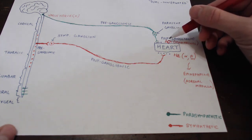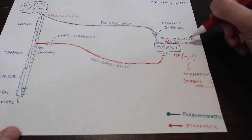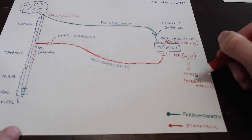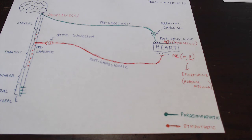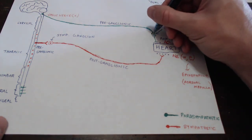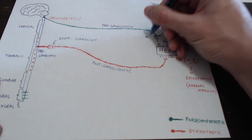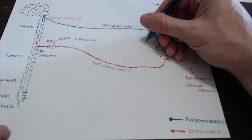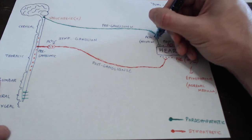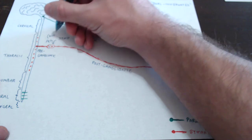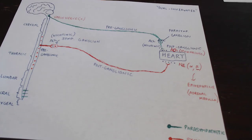So acetylcholine is going to be your neurotransmitter for parasympathetic responses. Norepinephrine and epinephrine are going to be the neurotransmitter and hormone that facilitate sympathetic responses. The last thing to finish up here: we've also got neurotransmitter being released by our pre-ganglionic neurons. The type of neurotransmitter used here really doesn't matter quite as much, but to make things simple — it's going to be acetylcholine in both cases. This acetylcholine will actually bind to nicotinic receptors on the autonomic ganglia.